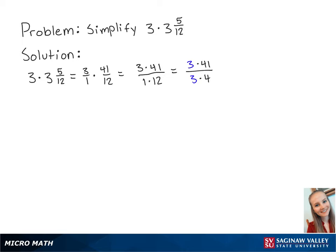Now, since we have 3 on the top and the bottom, these will cancel out, and we are left with 41 over 4.